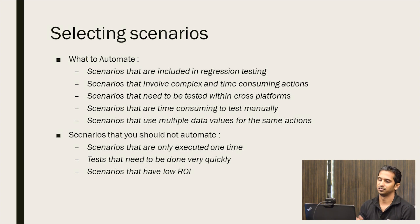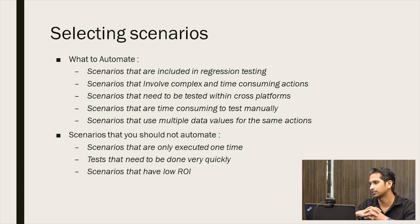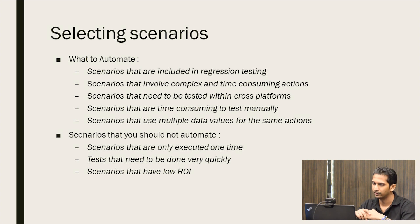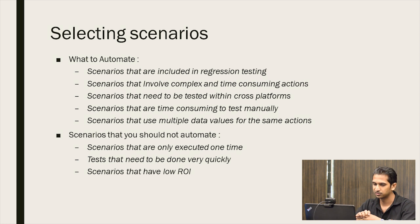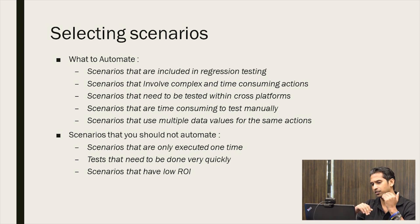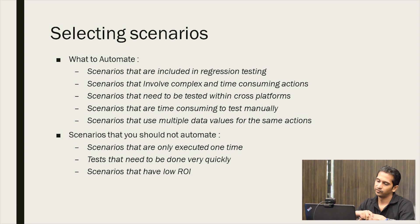What should you not select to automate? Scenarios that are only executed one time — like a bug fix. There's no point developing an automation script just for that. Also, there are some tests that can be executed very quickly manually. For those, don't add automation, because to do automation you need an automation engineer to script the scenario. If a test can be done manually very quickly and you're not going to use it again, don't automate it. And scenarios with low ROI — it's a waste of time and resources to automate those.